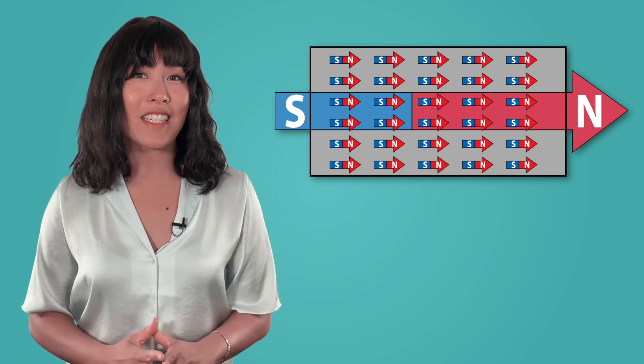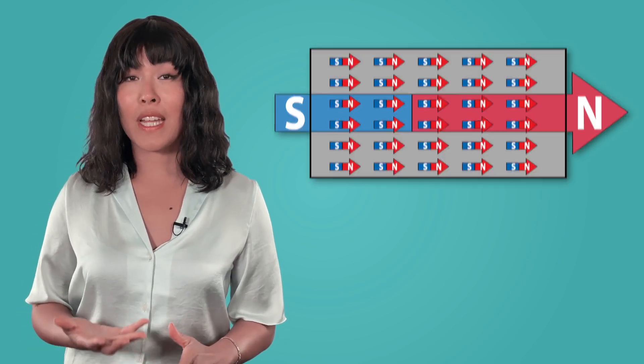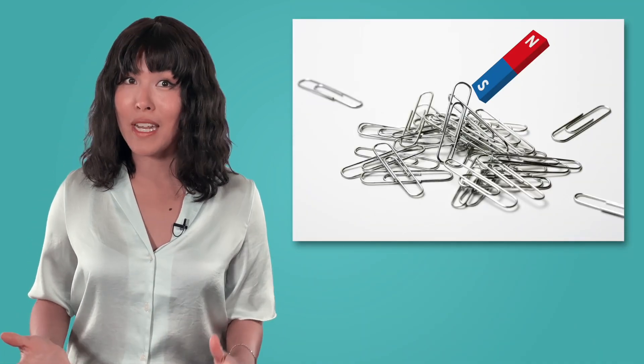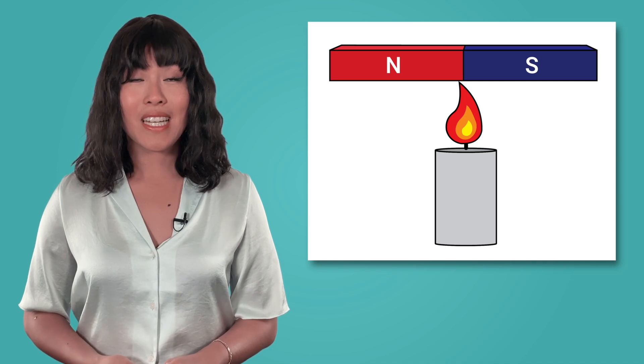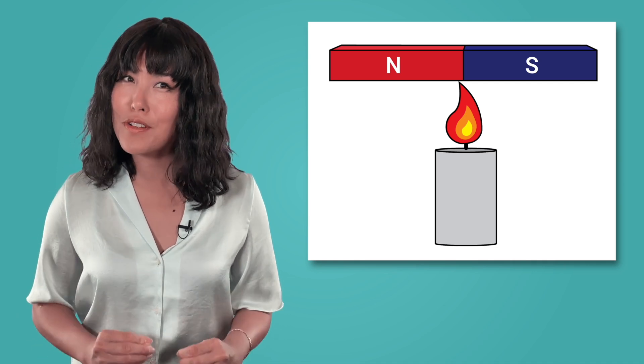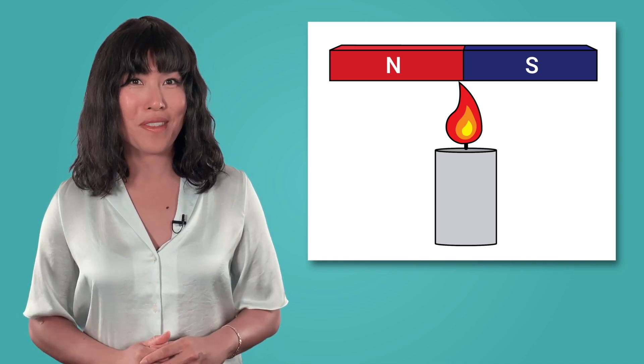In the lesson PDF activities, you'll look at the difference between temporary and permanent magnets, and find out how magnets can sometimes lose their magnetism. Next time, we'll explore this mysterious magnetic field in more depth. Until then, remember, the universe is vast and full of surprises, so never stop exploring.